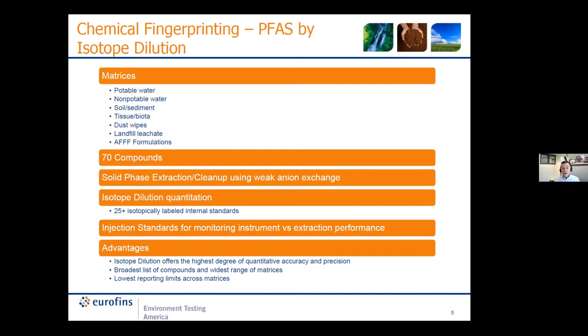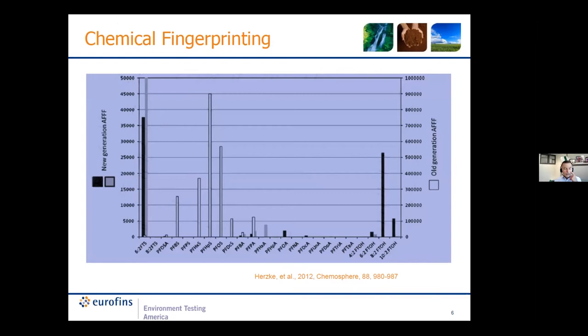Typically for fingerprinting, we use PFAS determination by isotope dilution because we can apply it across a wide range of matrices. For a large list of compounds — we recently announced we're up to 70 target compounds by isotope dilution analysis — and in some cases it's really just a replot or different graphical representation of your targeted compound analysis.